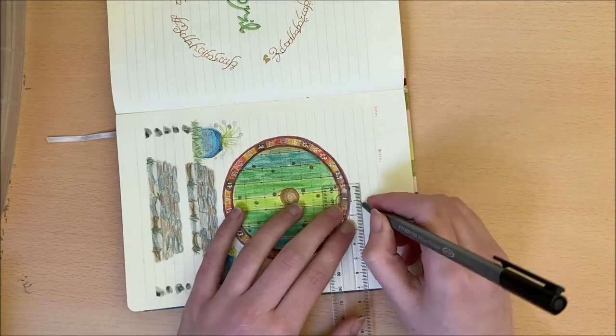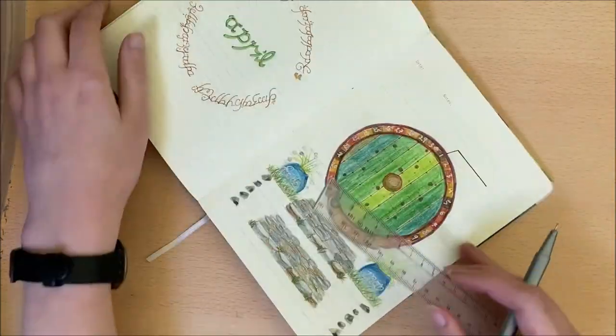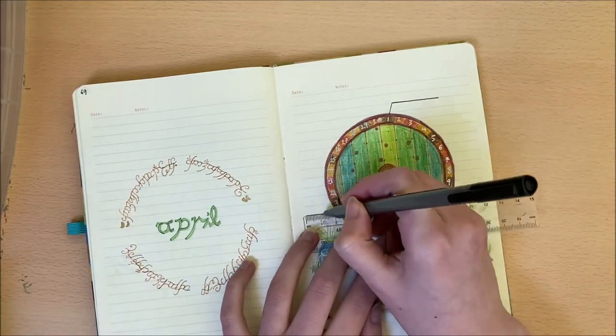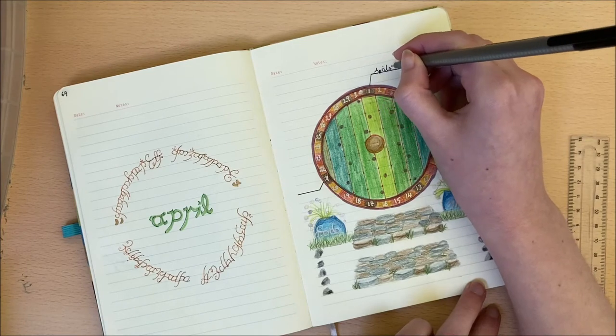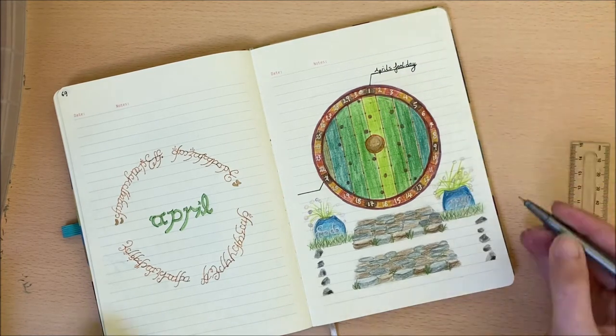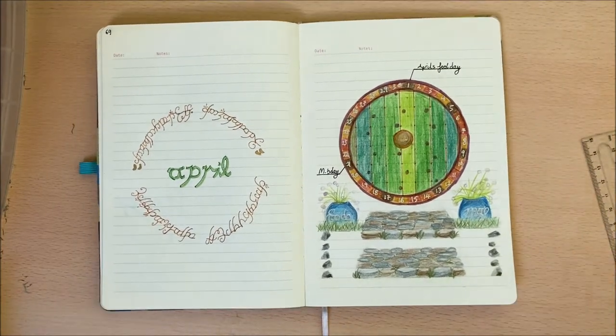And finally, here's just a quick example of how we would use this style of events tracker. So I'm simply drawing a line coming out from each date, and then writing what is occurring on the line. So for example, the first of April is April Fools, so I've written that in with my usual Stabilo marker.